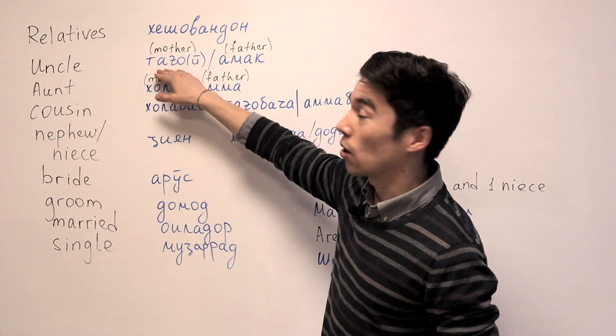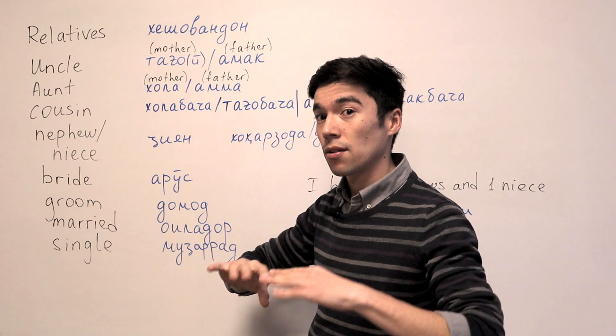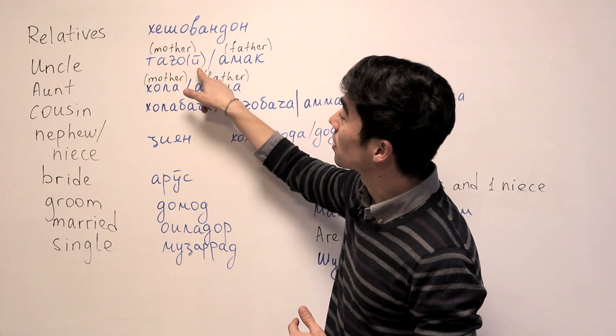And uncle, we say Taho. And in some places in the south, they say Taho'i.